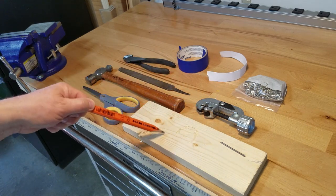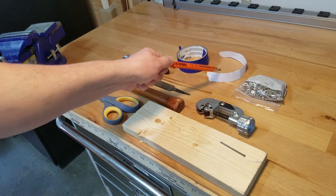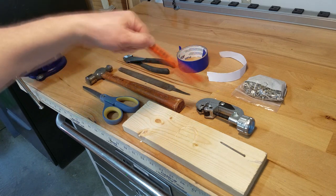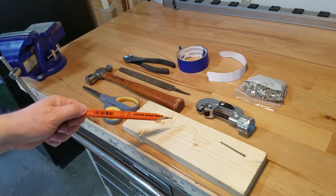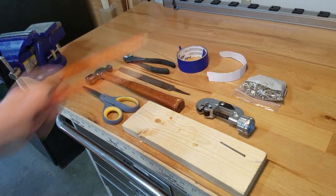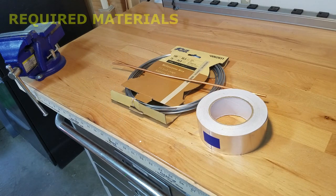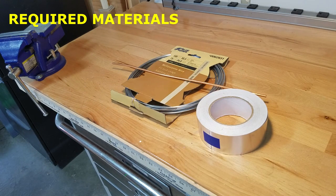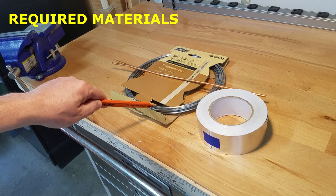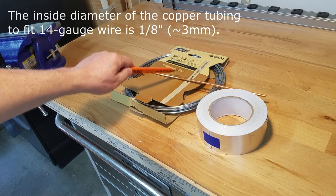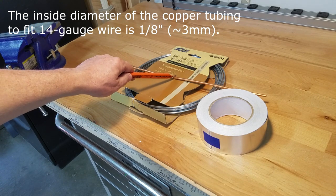a pipe cutter to cut the copper tubing or a small saw, some screws to create a jig for wire bending, a strip of paper long enough to go around the circumference of your stove, and some masking tape.